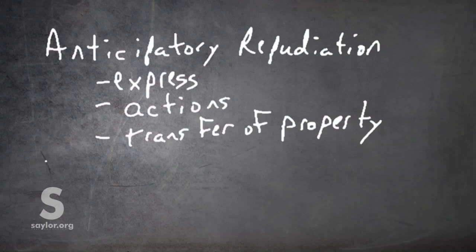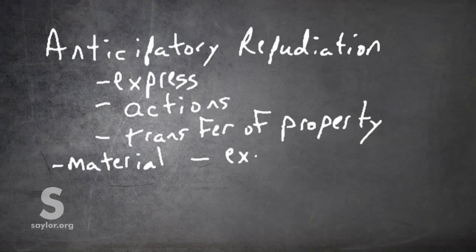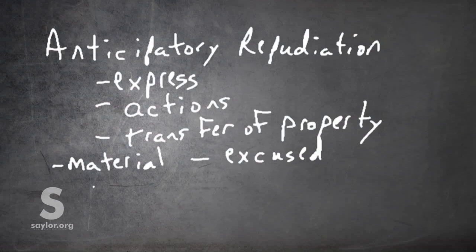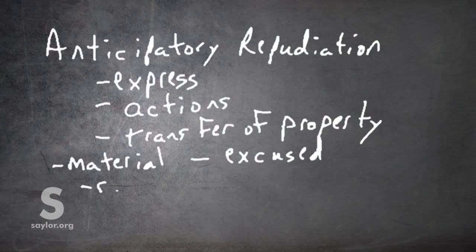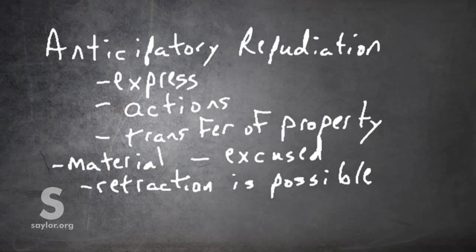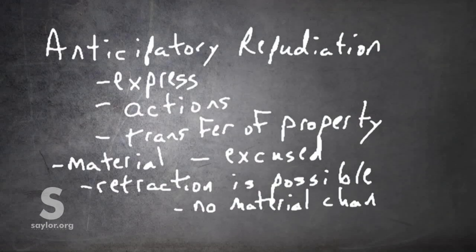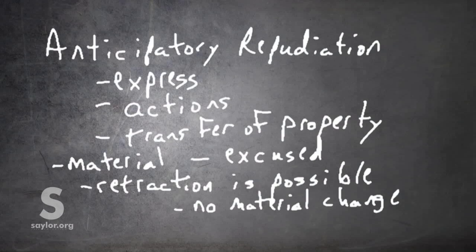In essence, this results in a material breach and the non-breaching party is excused from performance. It's terminated. The contract is terminated. Keep in mind also that it's possible to retract a repudiation. Retraction of repudiation is possible. However, there must not have been a material change in the circumstances or in the other person's situation.